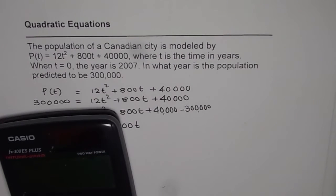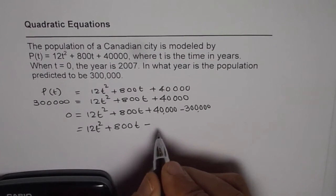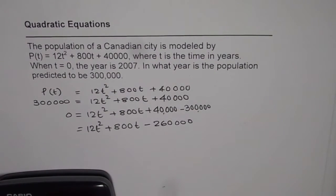300,000 minus 40,000. I recommend you to use calculator with a negative sign. Minus 260,000. Now we can actually simplify.